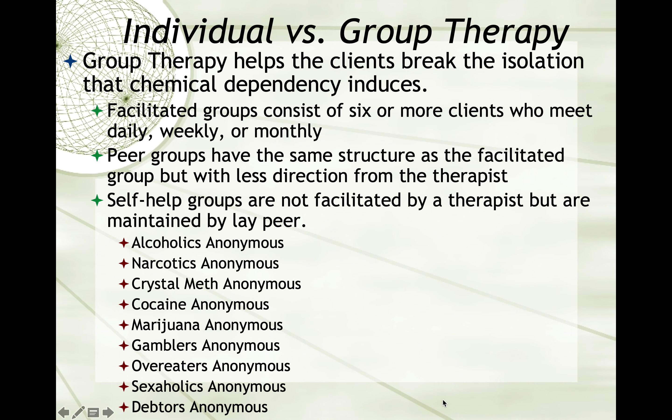Group therapy helps the individual break the isolation that chemical dependency induces. Facilitated groups consist of six or more clients who meet daily, weekly, or monthly. Peer groups have the same structure as the facilitated group, but with less direction from the therapist. Self-help groups are another type of group therapy — they are not facilitated by a therapist, but are maintained by a layperson.